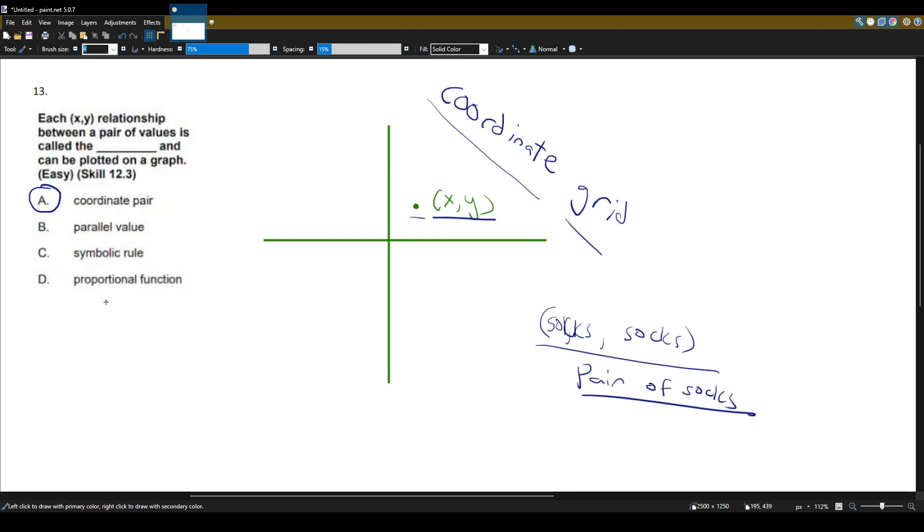The other answers don't really make sense here, because a point can't be a function. There's nothing parallel going on here, no parallel value. And a symbolic rule, we're not using any symbols here. So, coordinate pair is the only one that makes sense, and I just explained where the keywords come from in coordinate and pair.